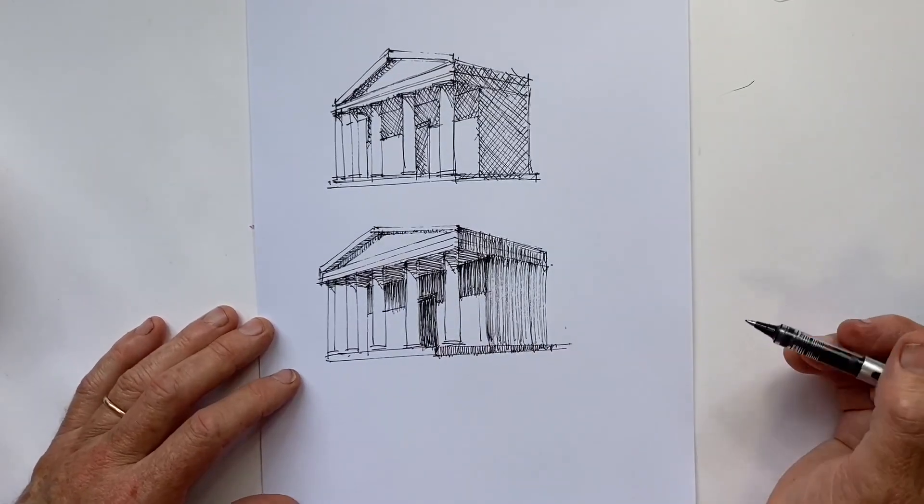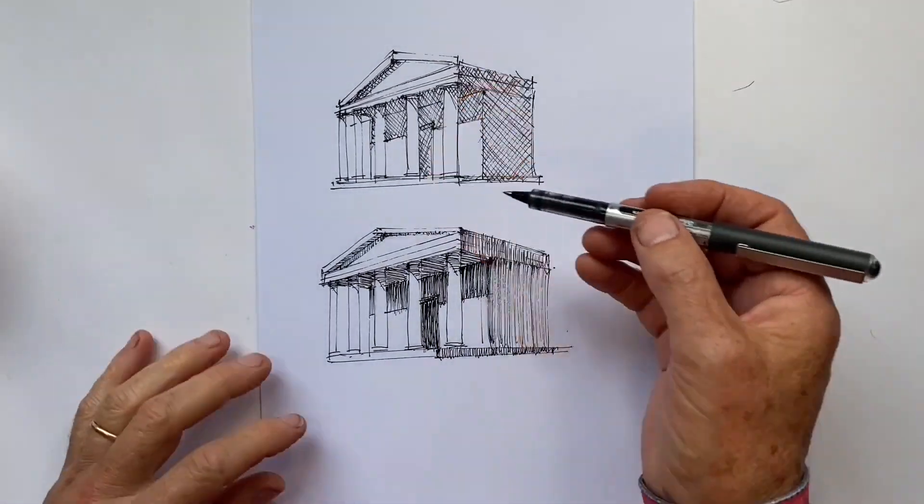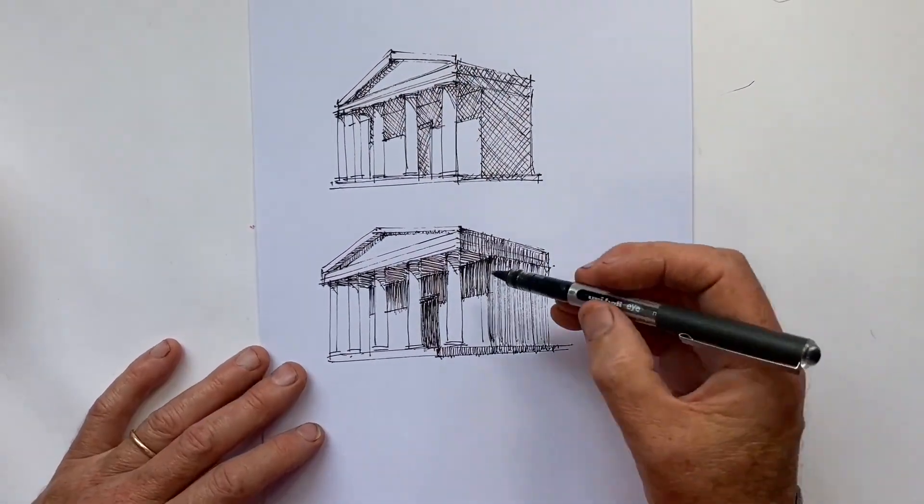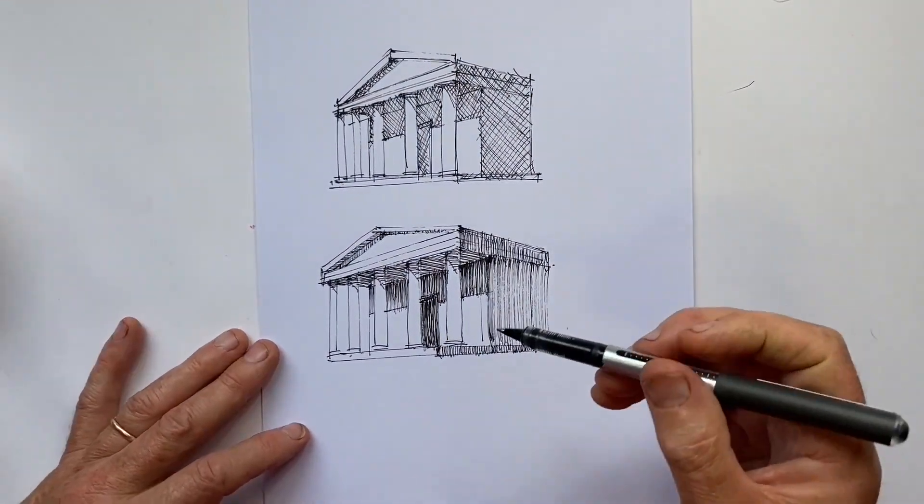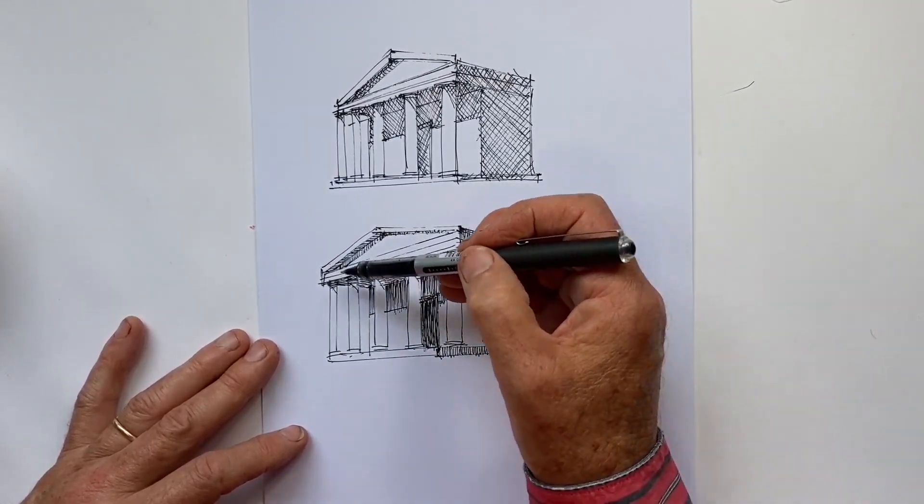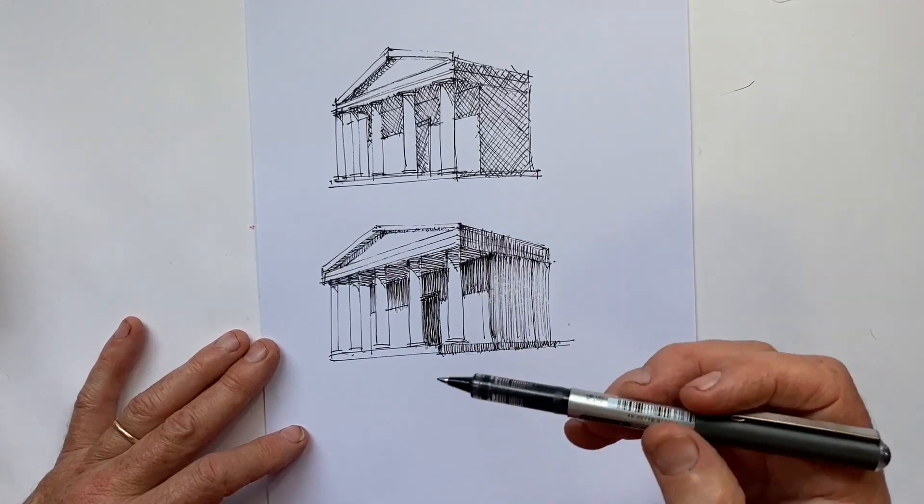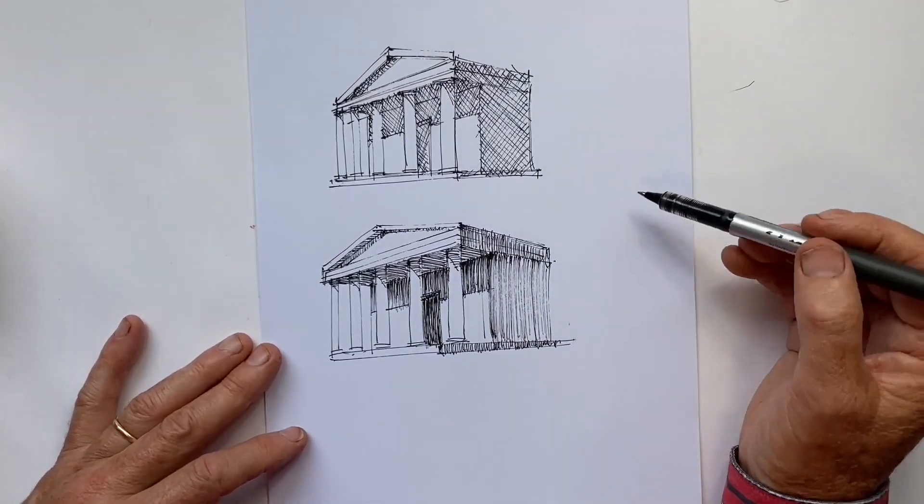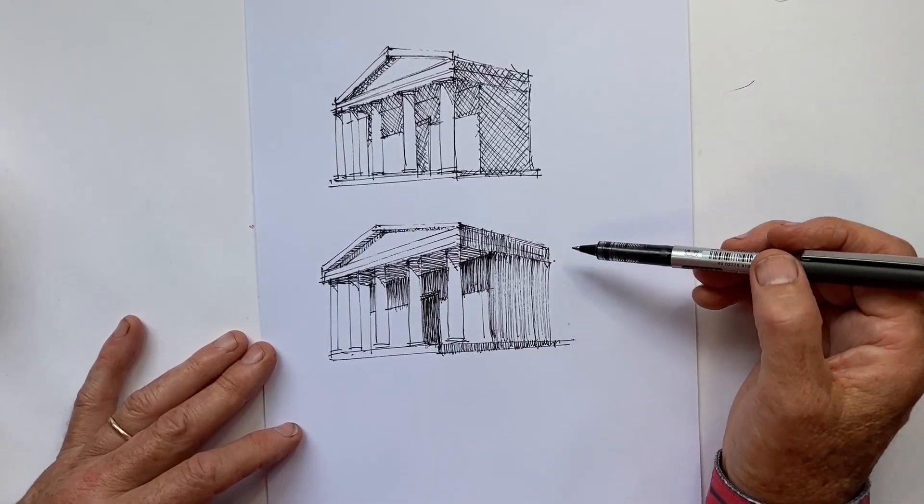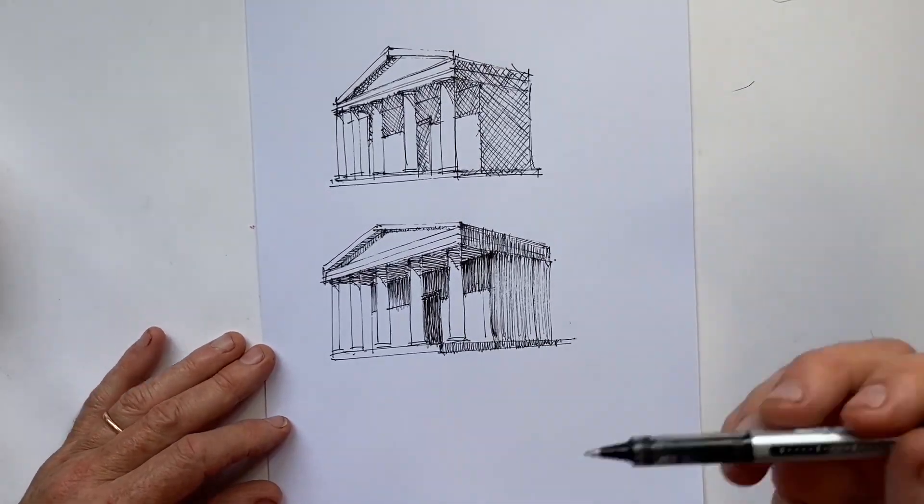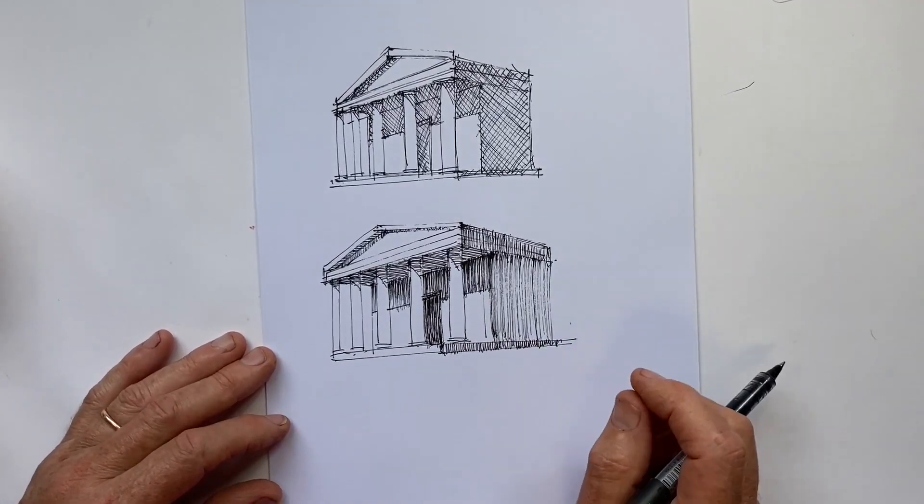The other thing that this does is it gives us no flexibility for varying the intensity of tone to make it darker or lighter. Whereas here, I've been able to increase the darkness in this section of shadow on the wall, which is going to be darker than this shade over here. And if you don't know the distinction between shade and shadow, I have a video on that. So that's probably well worth watching at this point because it's a very helpful distinction to understand when we're drawing.